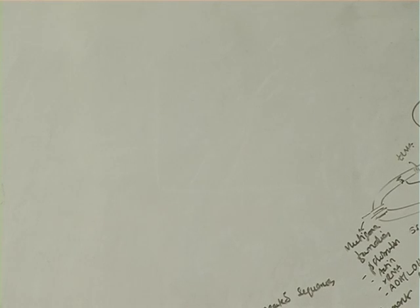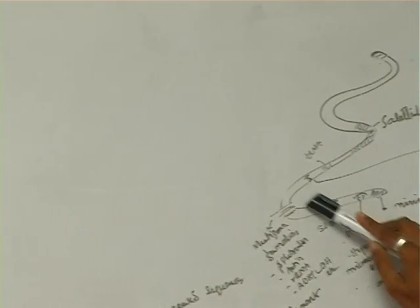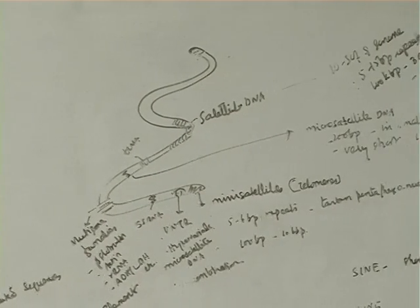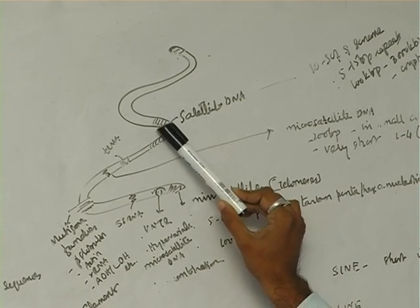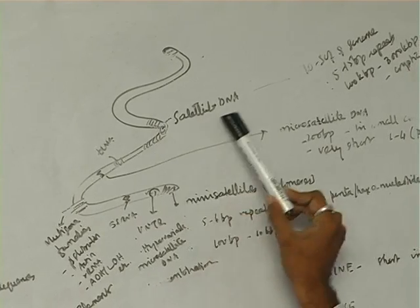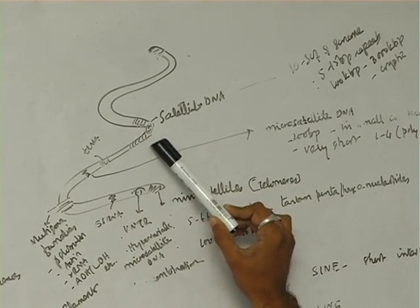Highly repeated sequences - if you look at this particular chromosome here. This is a chromosome. You see here there is a centromere, and associated with the centromere there is satellite DNA, and then you